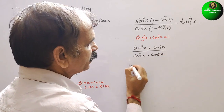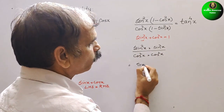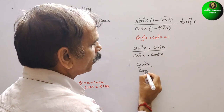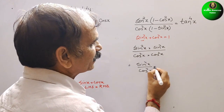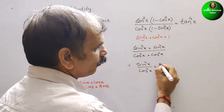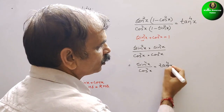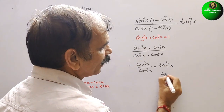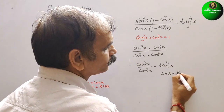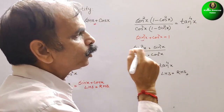So now if you see, this is nothing but sin to the power of 4x by cos to the power of 4x. That is nothing but tan to the power of 4x, since sin by cos is tan. So this is your LHS and RHS is also the same. So like this we have to do it.